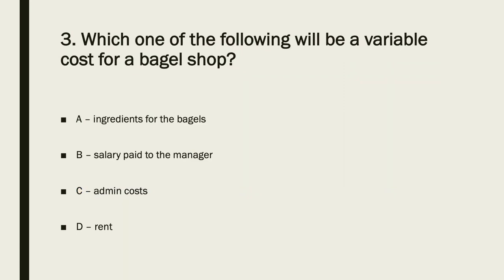The answer is A. Ingredients for the bagels are a variable cost; salaries are treated as a fixed cost; admin costs are fixed; rent is fixed. So by deduction, the answer has to be A.